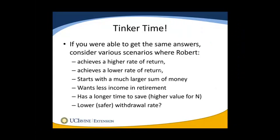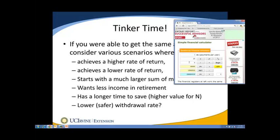From here you can tinker with various scenarios. Go into the calculator and ask: what if Robert achieved a 10% rate of return instead? You can see that would result in a substantially lower annual savings need. If we put it back at 8% and say Robert starts with more money — say $100,000 — that would drop it from the original $28,000 to about $18,000 instead. You can play with different figures: maybe if he needs less money in retirement, or is willing to target half the goal, around $1.04 million, you can explore what those different scenarios and what-ifs look like.